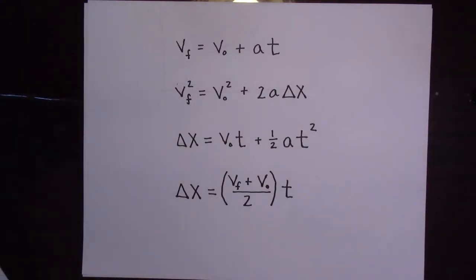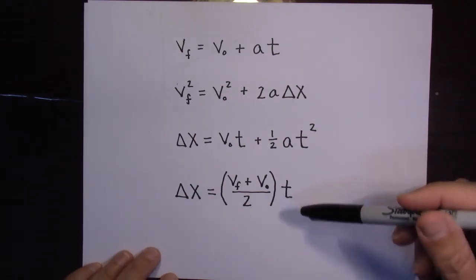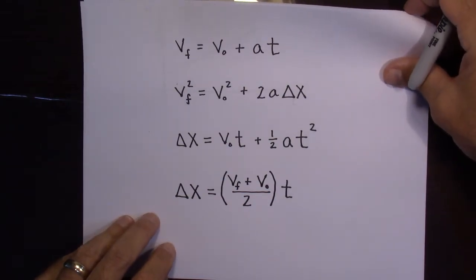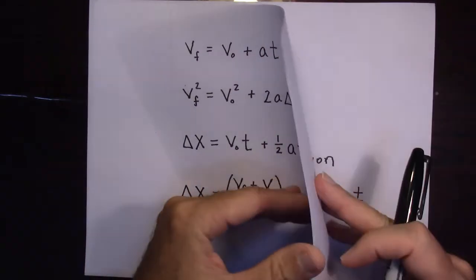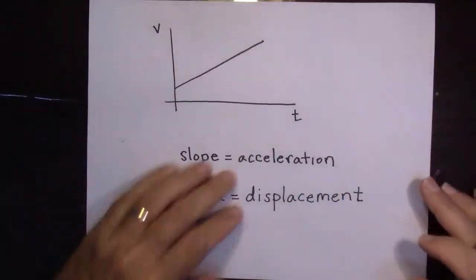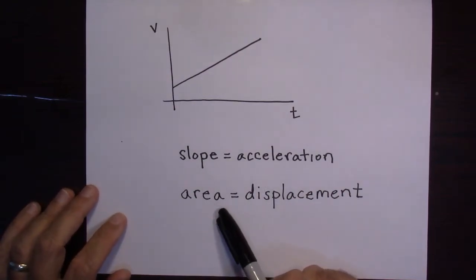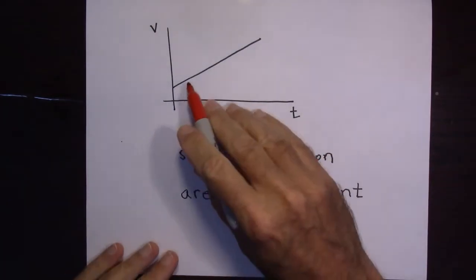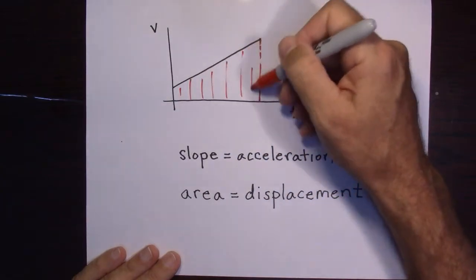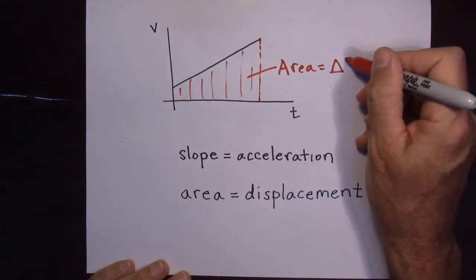Here are the kinematics equations, and these are for constant acceleration. You can't use this one, or this one, or this one unless you have constant acceleration — they require constant acceleration. I'm going to assume you already know that for a velocity versus time graph, the slope of the graph is acceleration, and the area bound by the graph is displacement. That area is displacement — for straight-line motion we call it delta X.